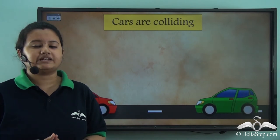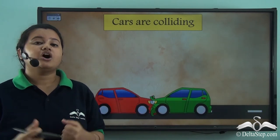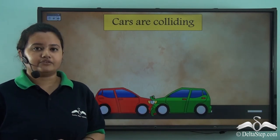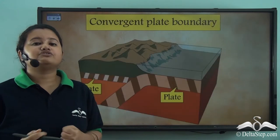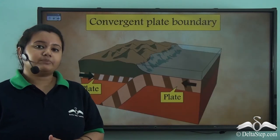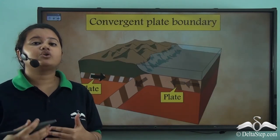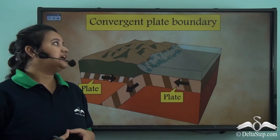Sometimes two cars collide or crash into one another. Similarly, if two tectonic plates move closer or collide with one another, it is known as a convergent plate boundary.